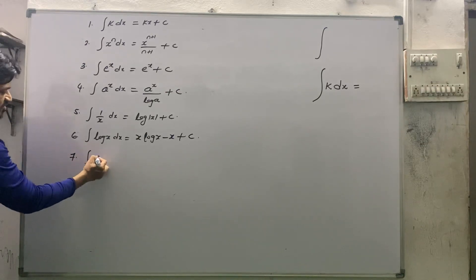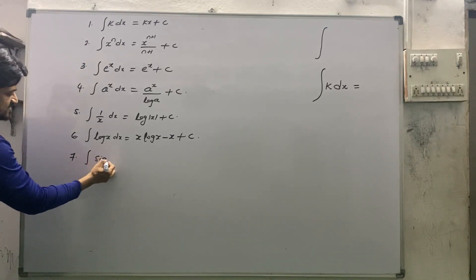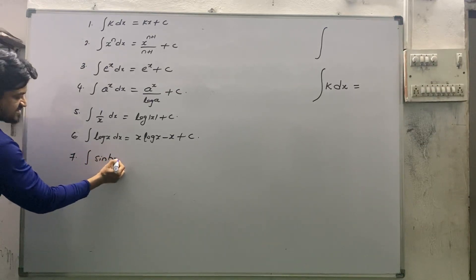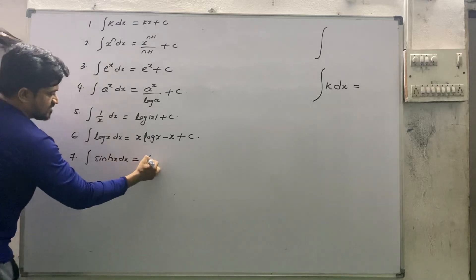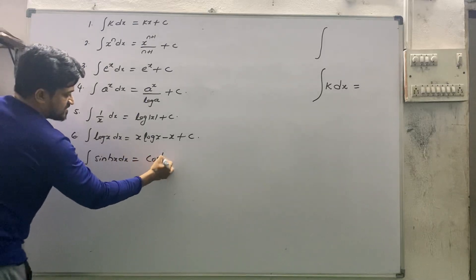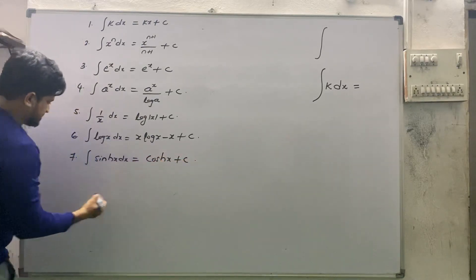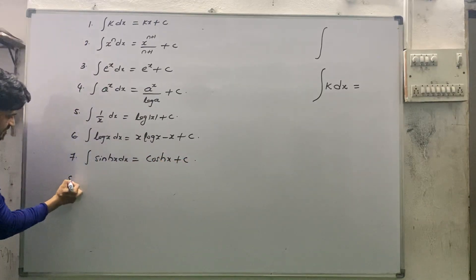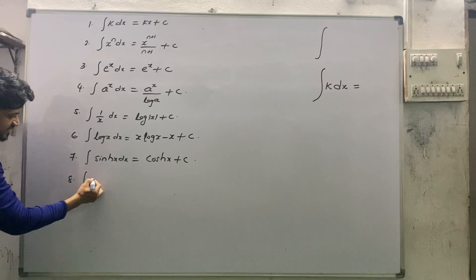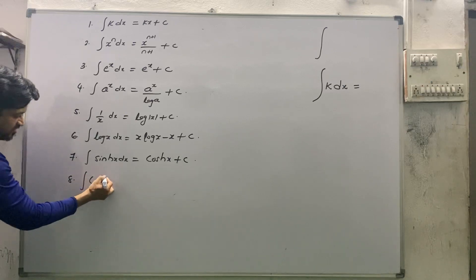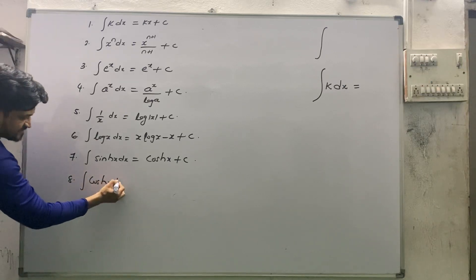Next: integral of sinh x dx = cosh x + c. And integral of cosh x dx = sinh x + c.